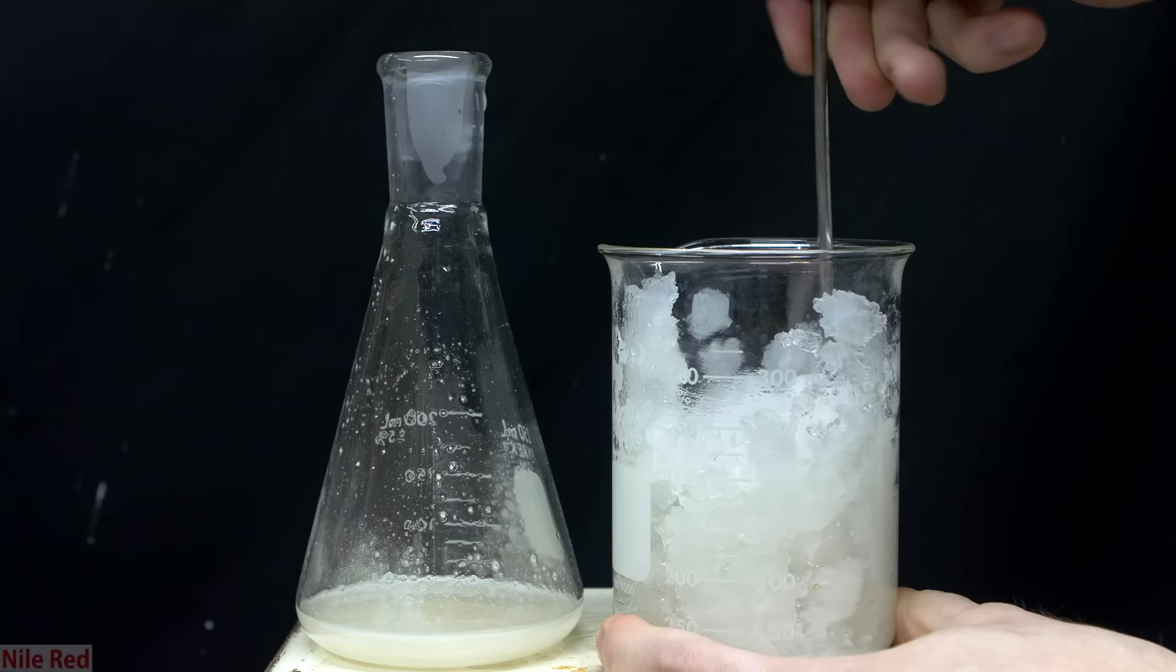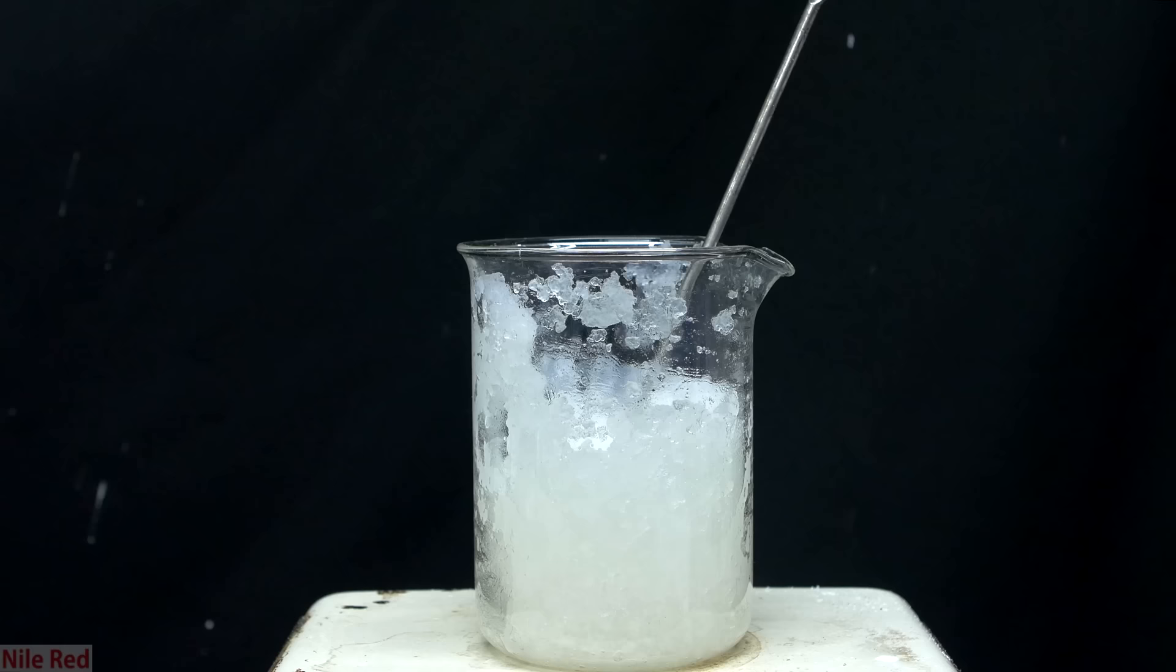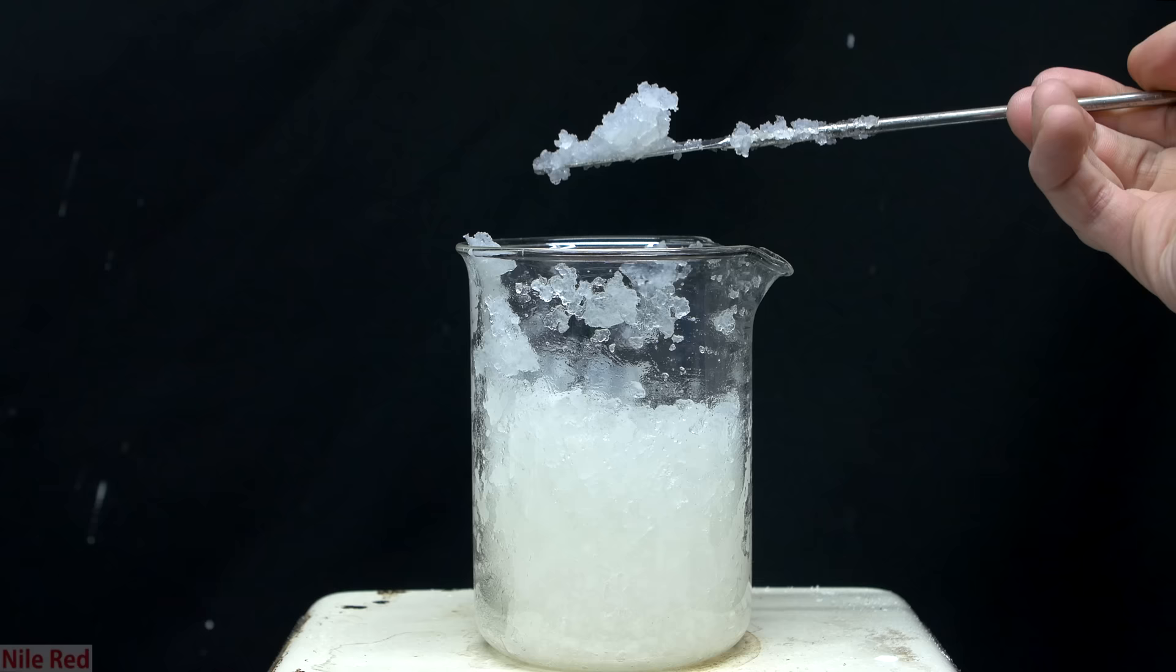Instead of just falling out of the solution and sinking to the bottom, the calcium acetate particles instead become evenly dispersed in the alcohol water mixture. So what we get is a very uniform mixture of a solid and a liquid, and that gives us our gel-like substance you see here.